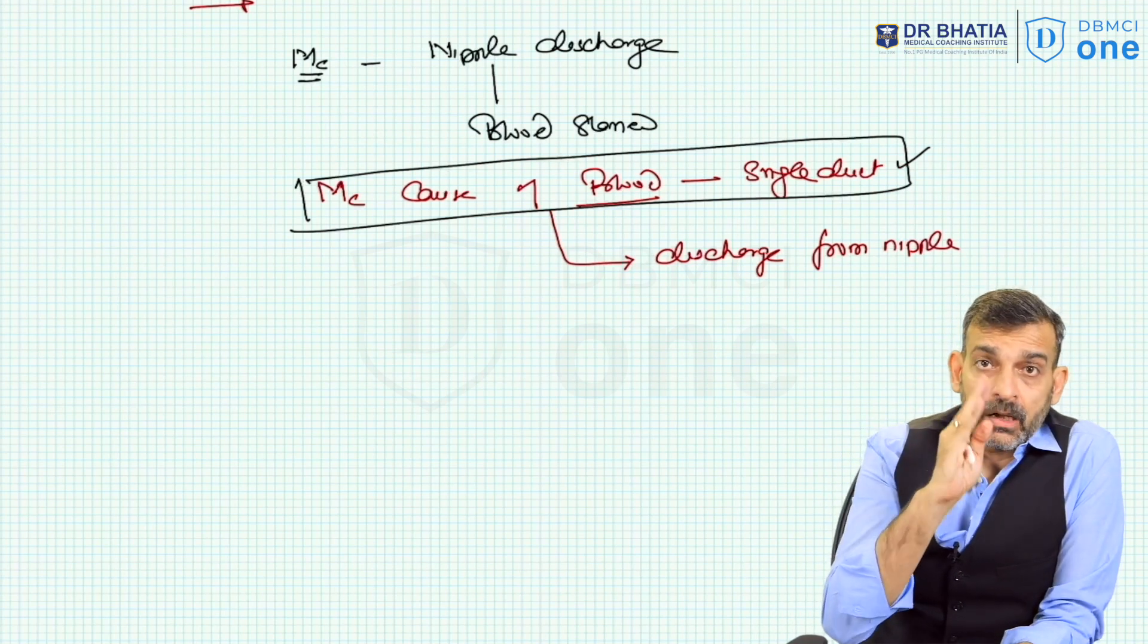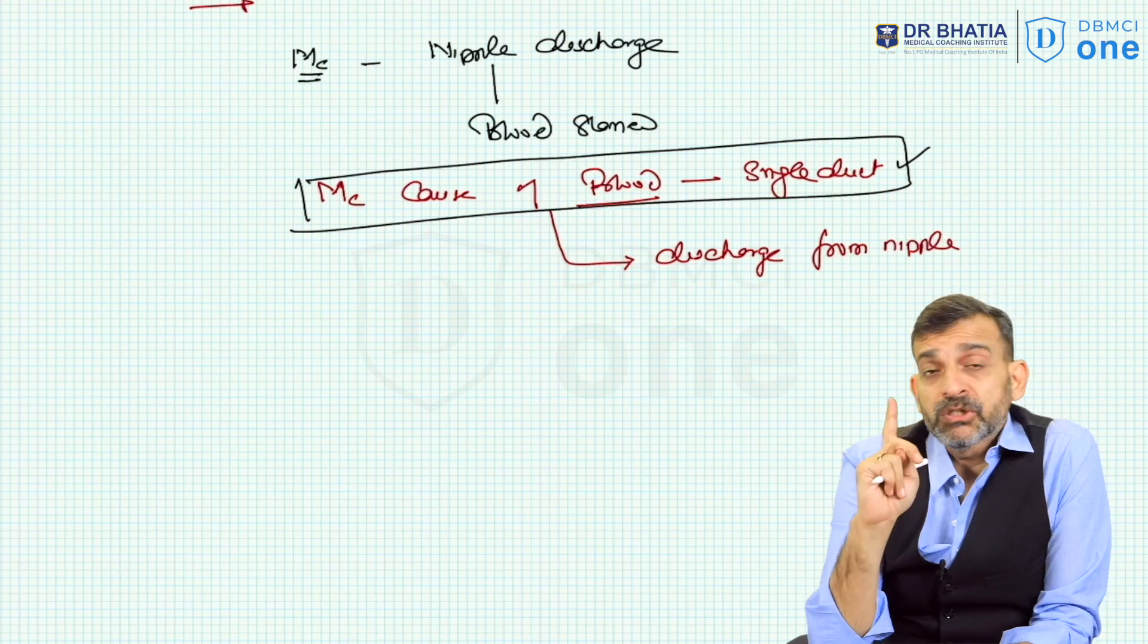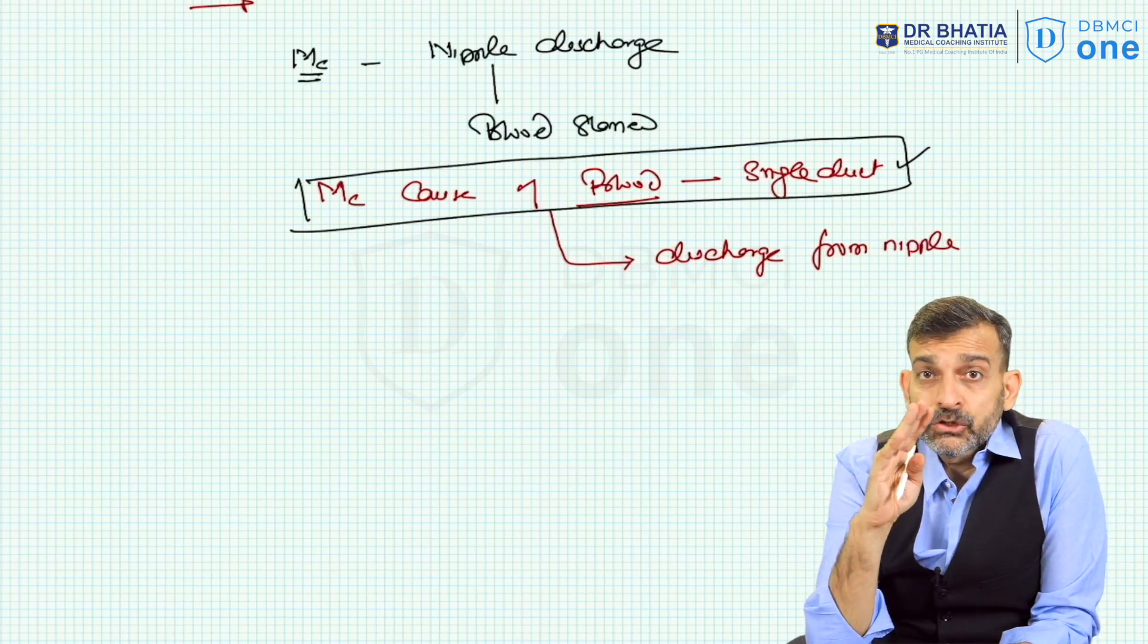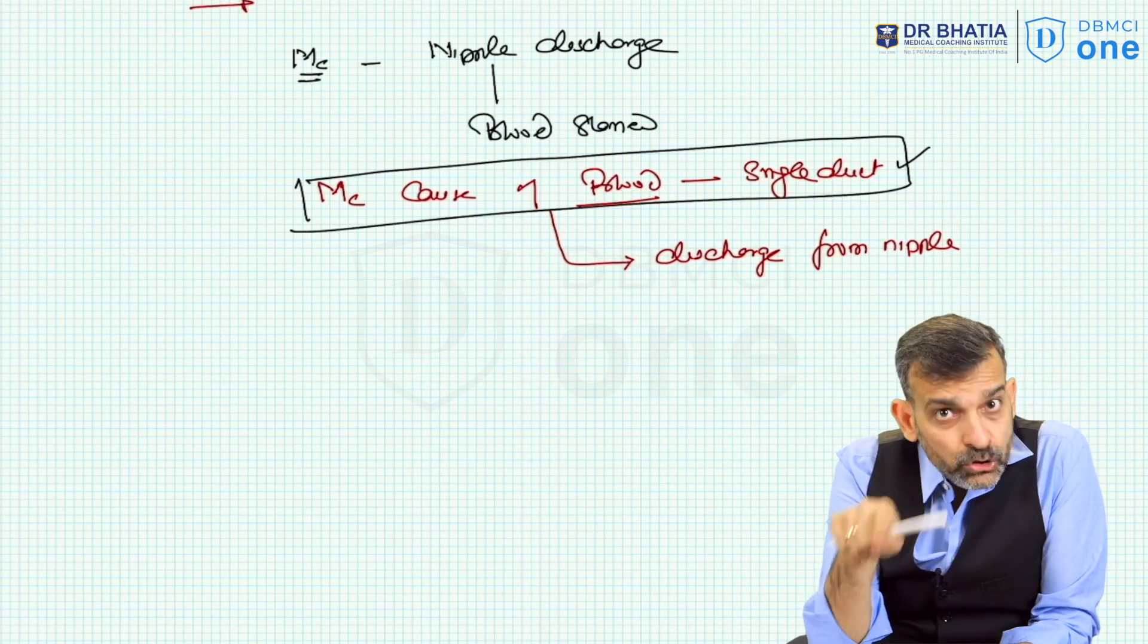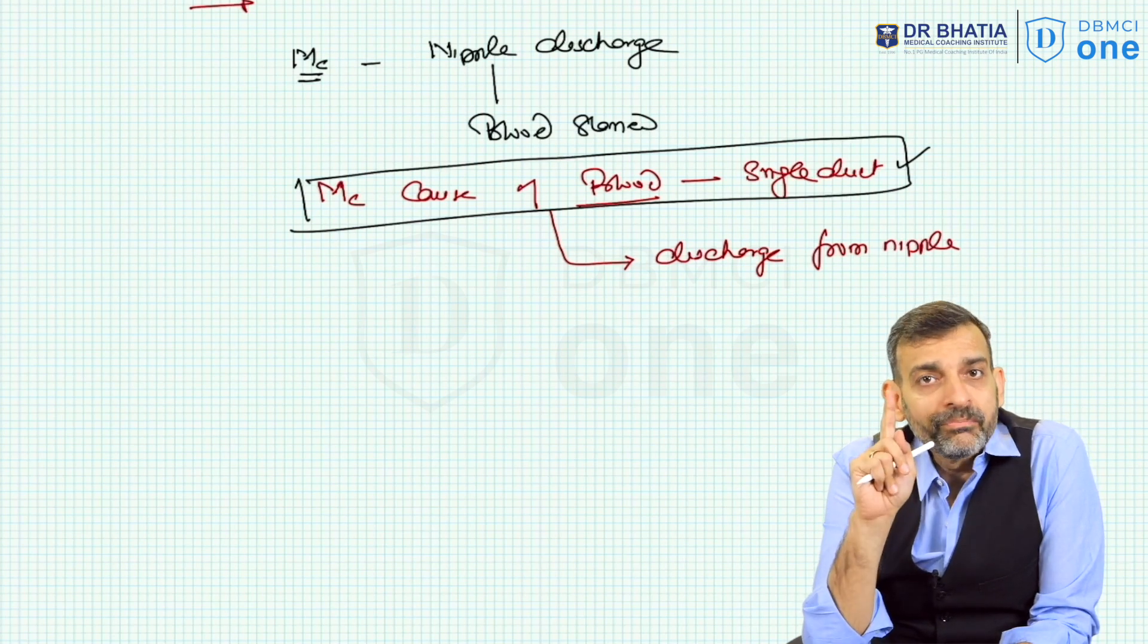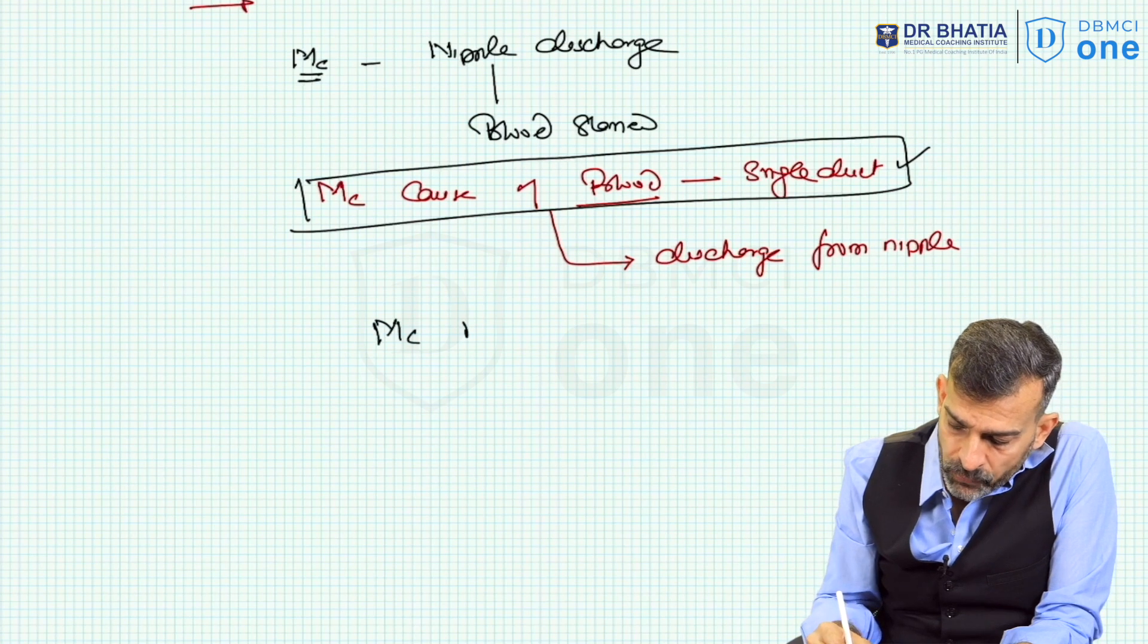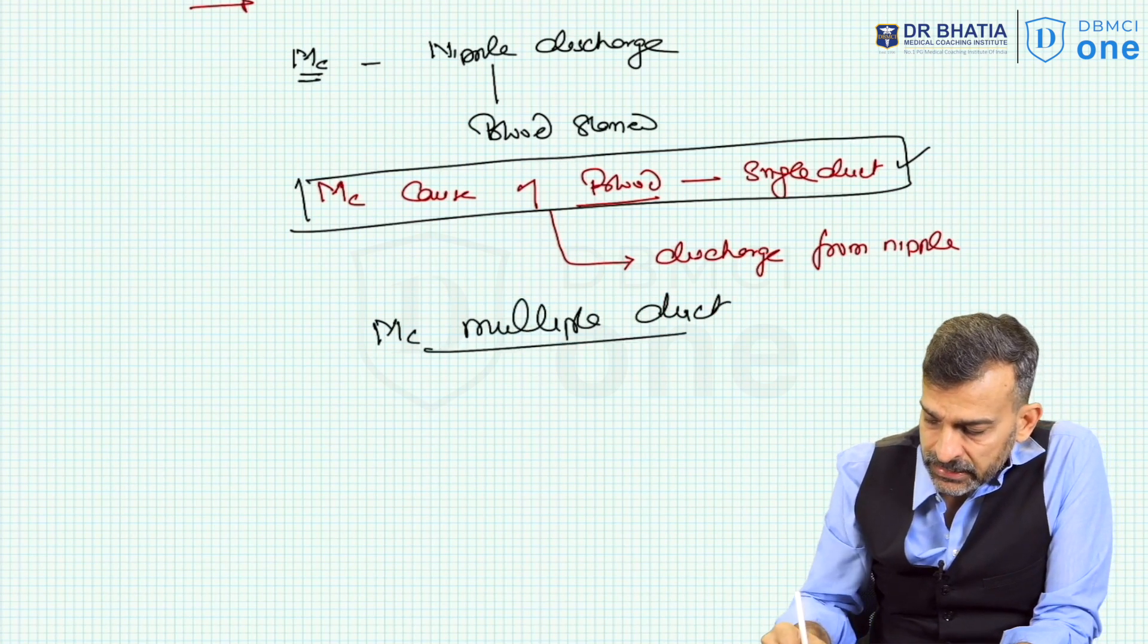Most common cause of blood-stained discharge from single duct is intraductal papilloma. But once there is a single duct blood-stained discharge, I know I have to be having a very high suspicion of malignancy. So, that means single duct blood-stained discharge should raise my suspicion of a malignancy though. But most common cause of single duct blood-stained discharge actually is intraductal papilloma, right? And most common cause of multiple duct blood-stained discharge is duct ectasia.